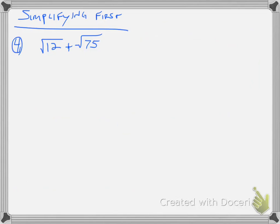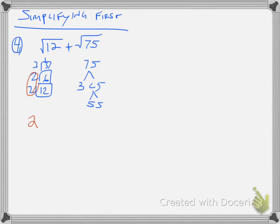For the number 12, using the factor tree I get 2 times 6, then 2 times 3. And for 75, I get 3 times 25, then 5 times 5. So the square root of 12: I have a pair of 2's — since it's a square root I'm looking for pairs — giving me 2 times the square root of 3. And the square root of 75 becomes 5 times the square root of 3. Now the radicals are the same, so 2 square roots of 3 plus 5 square roots of 3 — add the 2 and the 5 — gives 7 square root of 3.